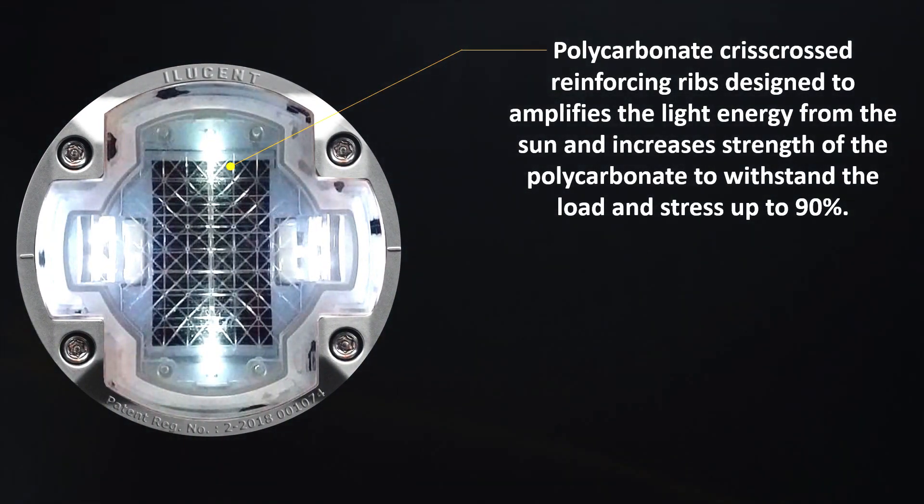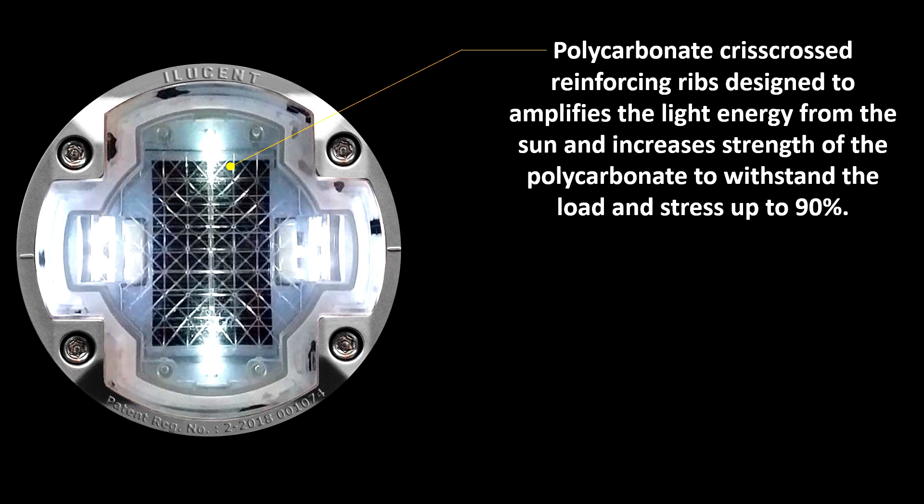Polycarbonate criss-crossed reinforcing ribs are designed to amplify the light energy from the sun and increase strength of the polycarbonate to withstand the load and stress up to 90%.